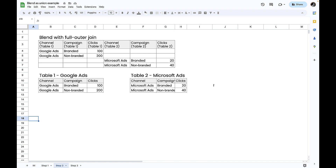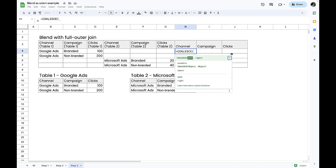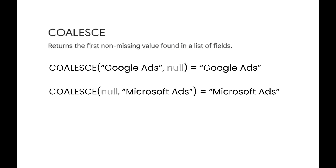The sneaky thing we're going to do is after we create this blend with a full outer join, we're then going to use the COALESCE function. COALESCE returns the first non-missing or non-null value found in a list of fields. In the first example, the list has 'Google Ads' as the first value and null as the second value, so it returns 'Google Ads'. In the second example, the first value is null and the second value is a Microsoft Ads value, so it returns that. I could have a list of 10 things and it will return the first non-null value.